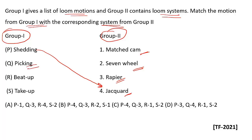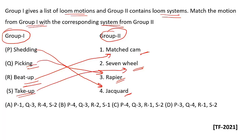For picking, we can use the rapier loom system. For beat up, we can use the matched cam. For take up, the seven wheel and five wheel motions can be used. If you read about shedding, picking, beat up, and take up motions in the fabric manufacturing system, this becomes straightforward.